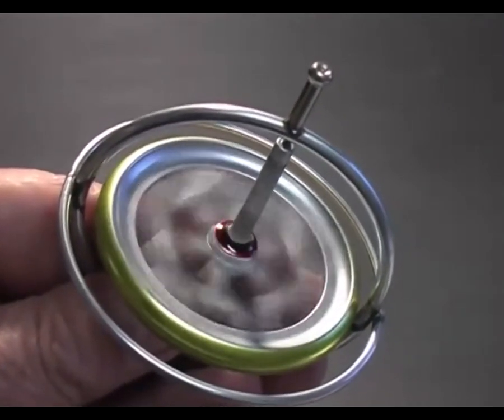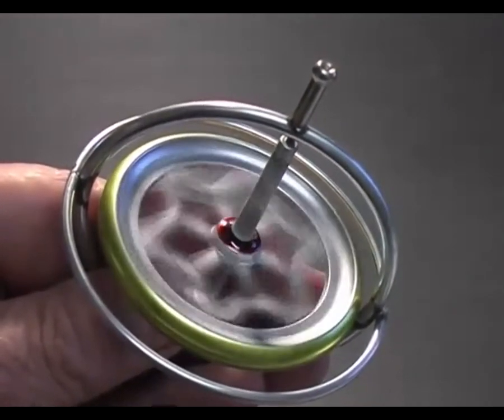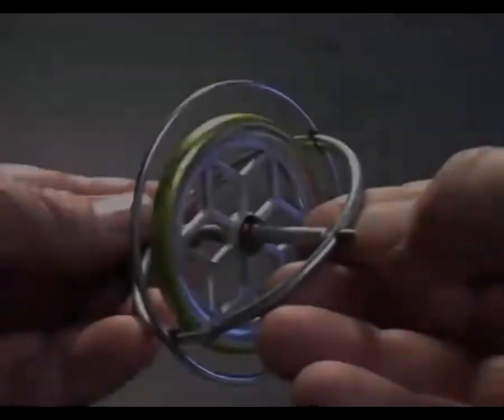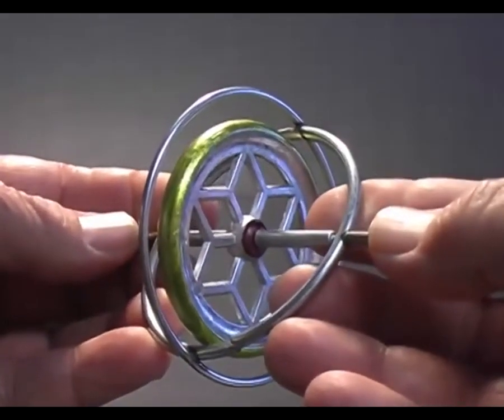This is a gyroscope. It consists of a metal wheel mounted on an axle. The wheel and axle spin freely, secured in a metal frame.